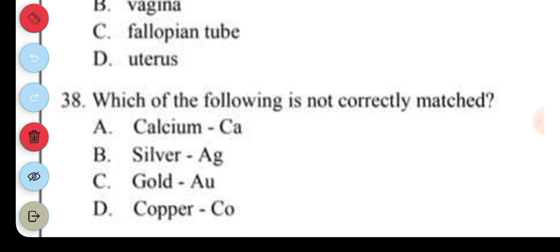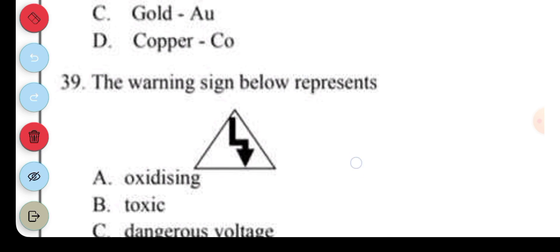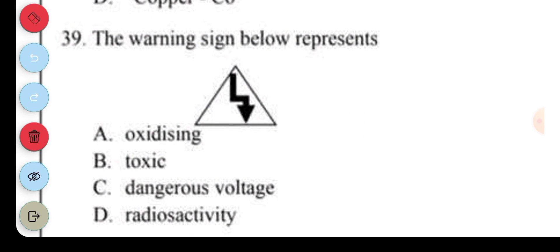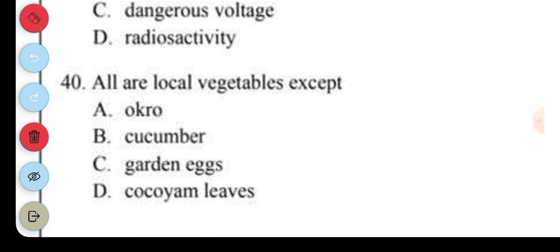Question 38. Which of the following is not correctly matched? Let's look through: Calcium is Ca, silver is Ag, gold is Au, copper is Cu not Co. So 38 is D. Question 39. The warning sign below, this warning sign has a triangle and then a zigzag arrow in it. It's definitely dangerous voltage, so C. Question 40. All are local vegetables except: A. Okro. B. Cucumber. C. Garden eggs. D. Cocoyam leaves. The answer to question 40 is B. Click on the link by my channel name to see more videos. Jeb Paul.